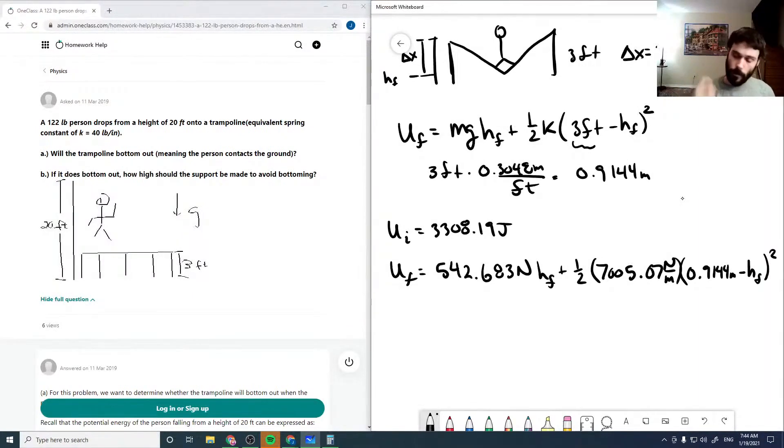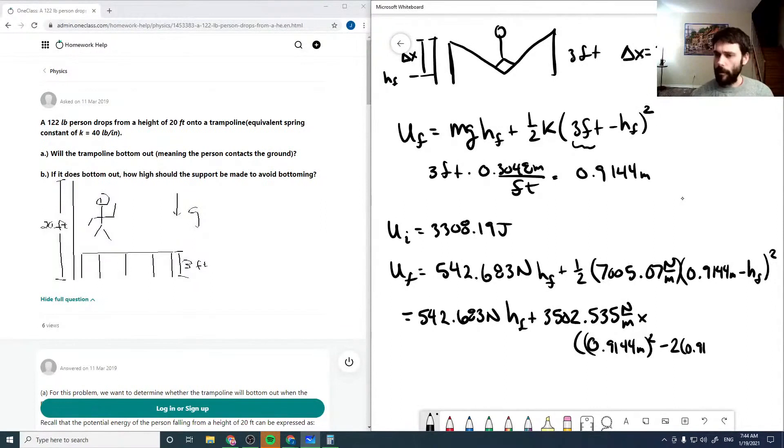So now we can expand this in terms of our hf times hf. So we're going to have to square that, so this is 3502.535 newtons per meter, and then this all gets multiplied by 0.9144 meters squared minus 2 times 0.9144 times hf plus hf squared.